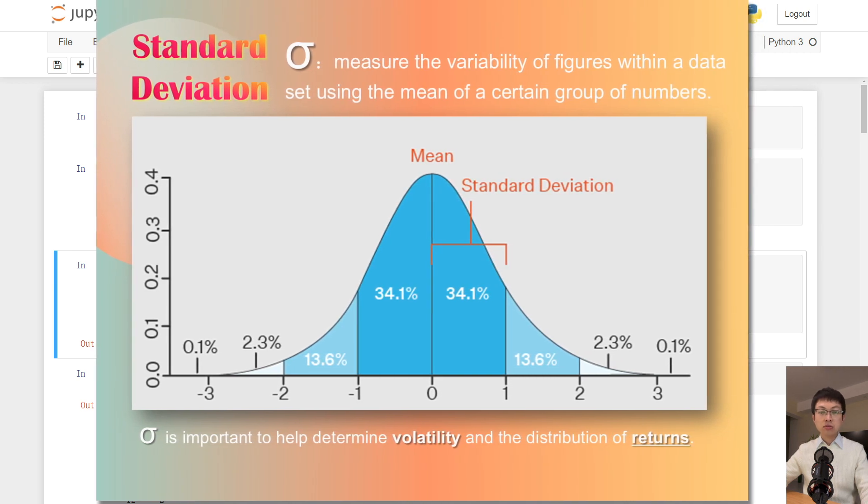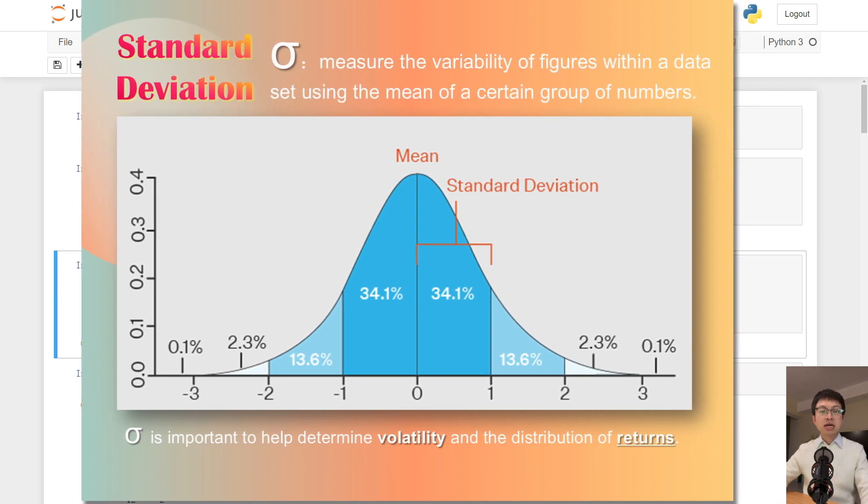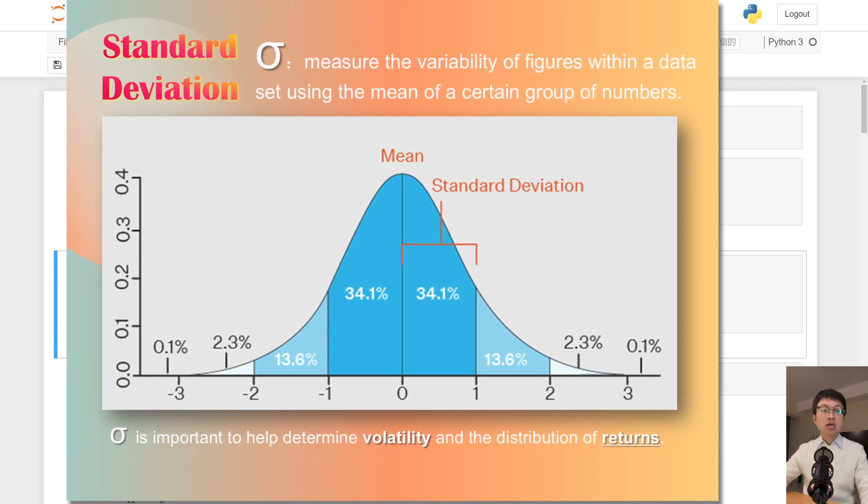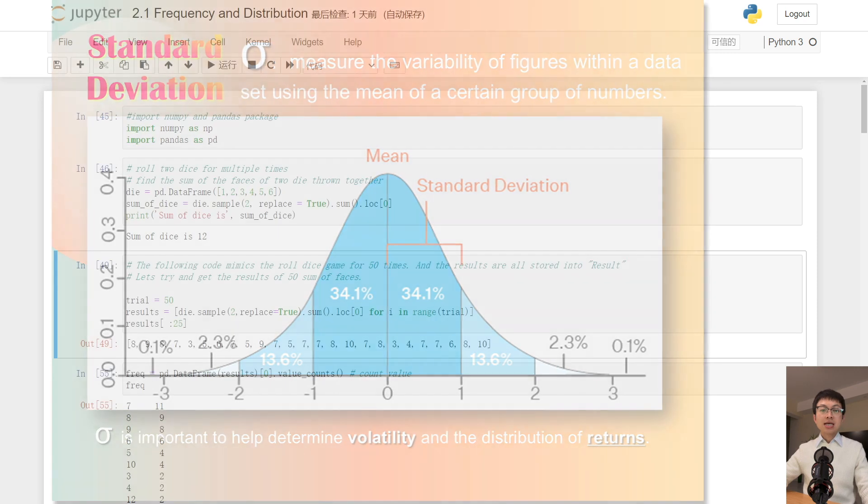It measures the variability of figures within a data set using the mean of a certain group of numbers. It is important to help determine volatility and the distribution of returns.